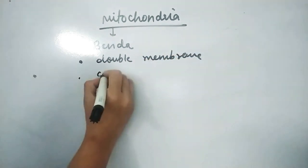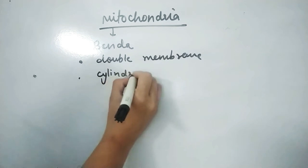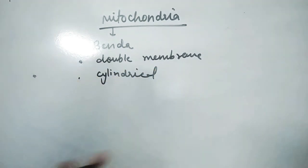The shape is cylindrical and it is found in all eukaryotic cells, but it is absent in RBC and prokaryotic cells.